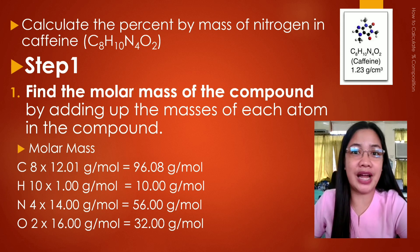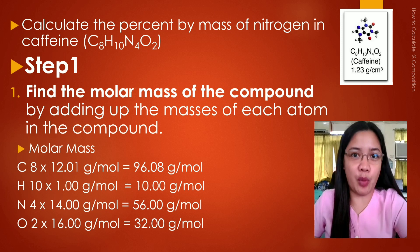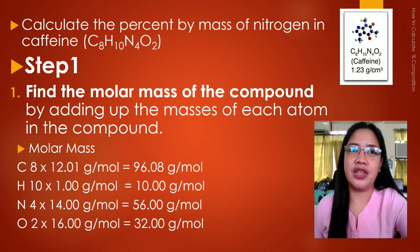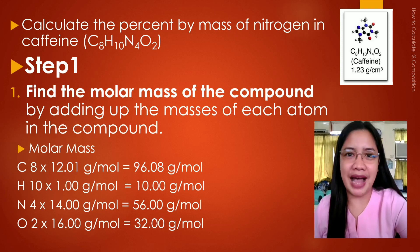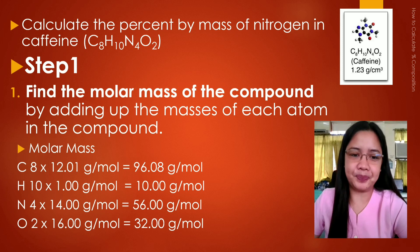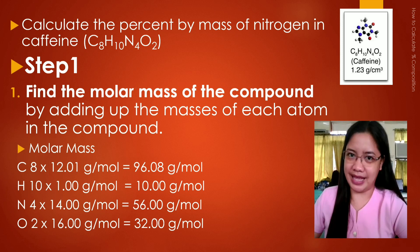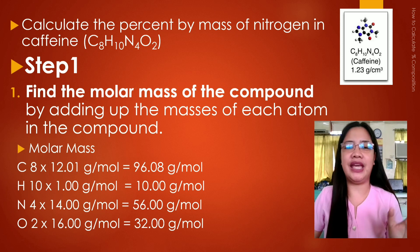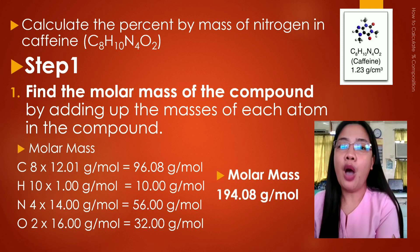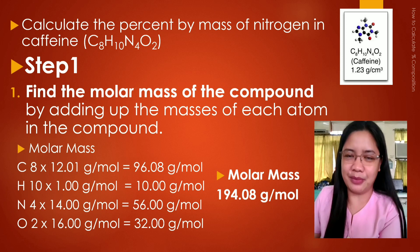You have to multiply this by their atomic mass. For carbon we have 12.01 grams per mole, for hydrogen 1.00, for nitrogen 14.00, and for oxygen 16.00. Remember that before calculating the molar mass of a compound, you need to have your periodic table of elements. Now let's compute by multiplying each by its atomic mass. To get the molar mass of the compound, you simply get the total. The total molar mass for this compound is equivalent to 194.08 grams per mole.